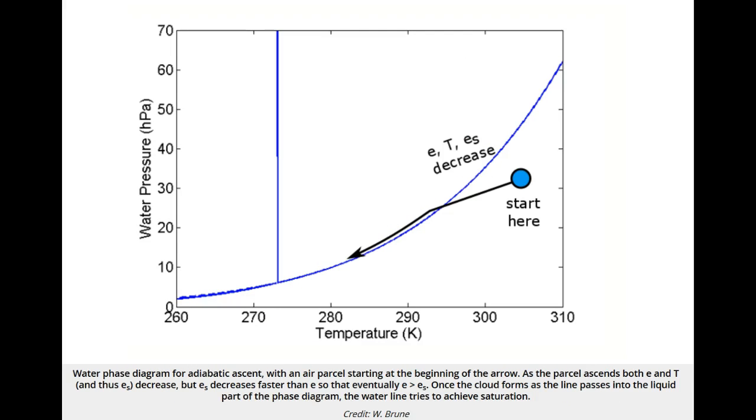The third process is adiabatic ascent. As an air parcel ascends, its pressure and temperature drop. Because the water vapor mixing ratio is constant until a cloud forms, the drop in pressure means a drop in the water vapor pressure. At the same time, the drop in temperature means a drop in the saturation vapor pressure, which depends only on temperature.